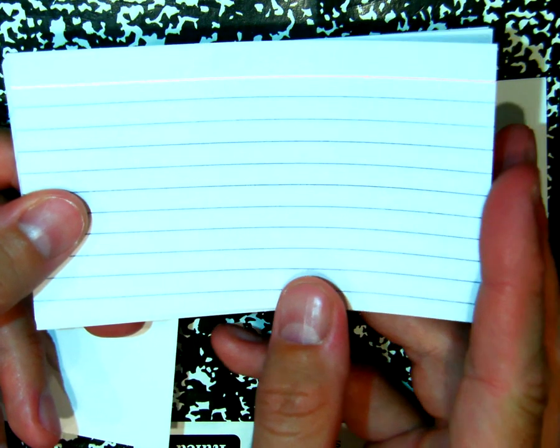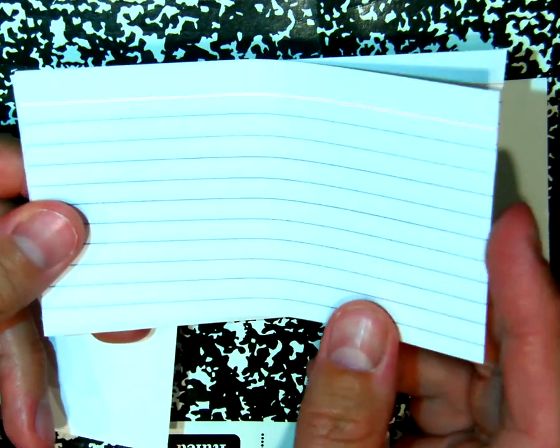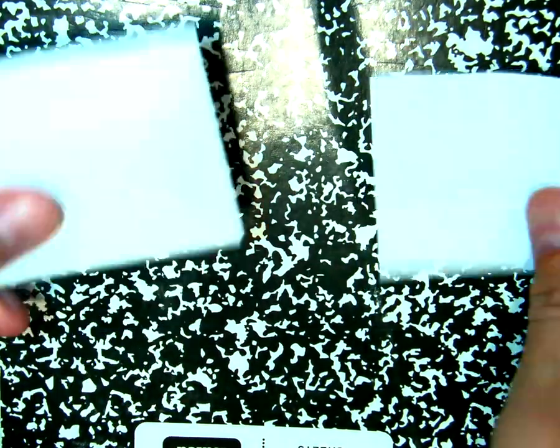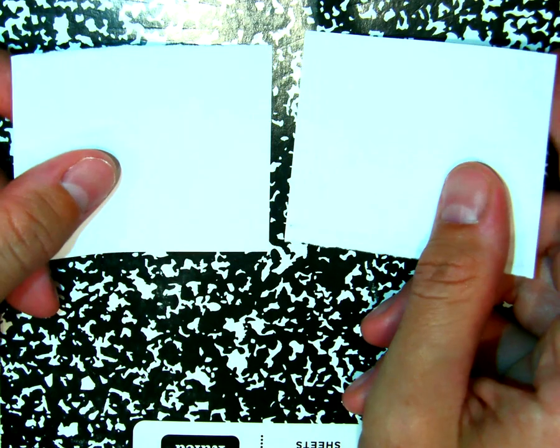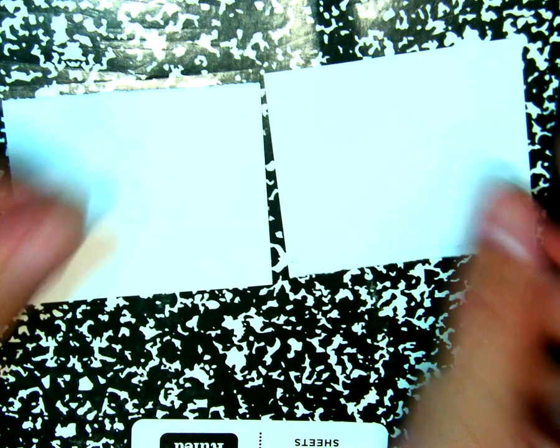So what you want to do is you want to get your 10 index cards, you want to fold them in half, and then cut or rip them into perfect little rectangles. And if you want to pause this right now so you can cut up your cards, you can go for it.